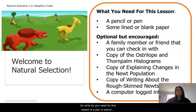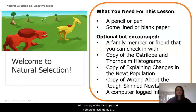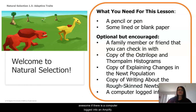What you'll need for this lesson is a pen or pencil, some lined or blank pieces of paper, and optional but encouraged: a family member or friend you can check in with, a copy of the Osterlope and Thornpom histograms, a copy of Explaining Changes in the Newt Population, and a copy of Writing About the Rough Skin Newt. Also awesome if there's a computer logged in to Amplify.